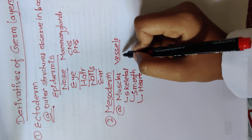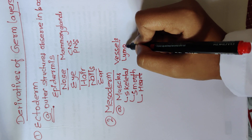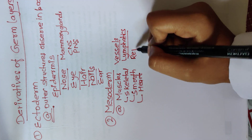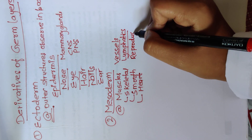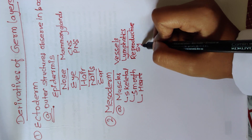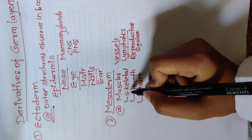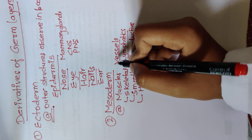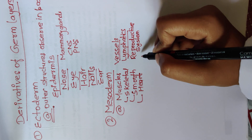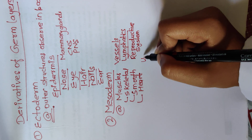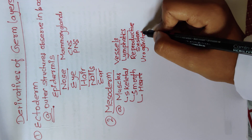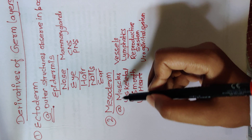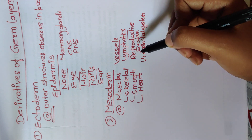Along with vessels, lymphatics are also included. Mesoderm also includes the reproductive system and the urogenital system. So for the mnemonic, remember: muscles, vessels, lymphatics, reproductive system, and urogenital system.